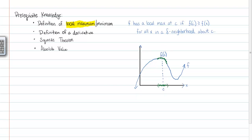That 'or equal to' is always a point of contention, but it is how local max is defined — and similarly for a local min, you swap the inequality. Also note that because f of c must be greater than or equal to f of x for all x in a delta neighborhood, we are assuming the function is defined on either side of c. So endpoints are not fair game.